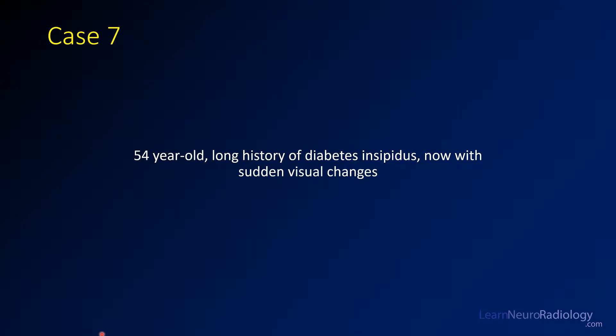For case 7, we're dealing with a 54-year-old with a long history of diabetes insipidus and now visual changes.